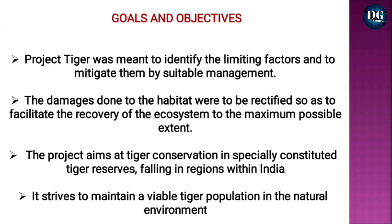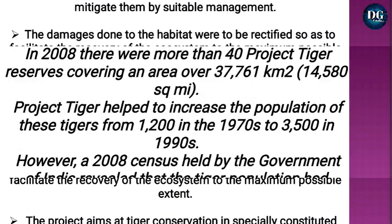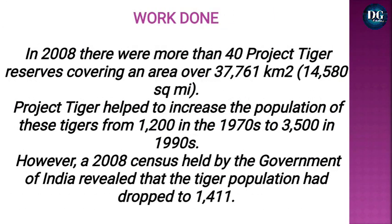It strives to maintain a viable tiger population in the natural environment. The goals and objectives of Save Tiger Project were: to identify the limiting factors and to mitigate them by suitable management; the damage done to the habitat was to be rectified so as to facilitate recovery of the ecosystem to the maximum possible extent. By 2008, there were more than 40 tiger project reserves covering an area of over 37,761 square kilometers.